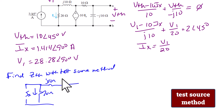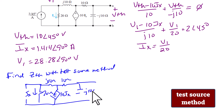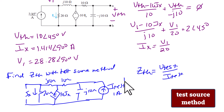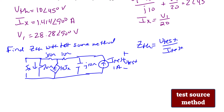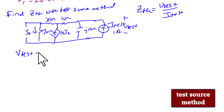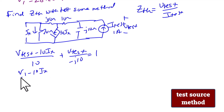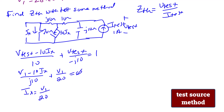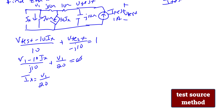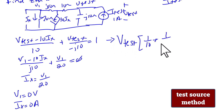We add a test current source of 1 amp, and Z Thevenin equals V_test over I_test where V_test is the voltage across that current source. Using node voltage method: (V_test minus 10I_x)/10 + V_test/(negative J10) = 1 amp, and (V1 minus 10I_x)/(J10) + V1/20 = 0, with constraint I_x = V1/20. Solving yields V1 = 0 volts and I_x = 0 amps. So V_test times (1/10 + 1/(negative J10)) = 1, giving V_test = 7.07 angle negative 45 degrees.